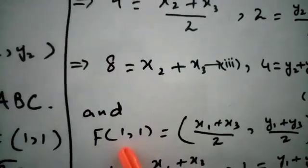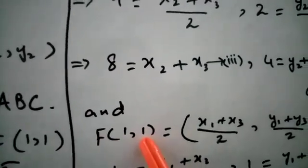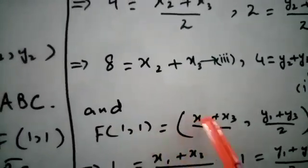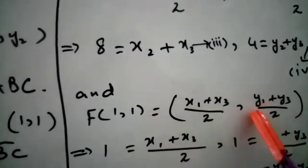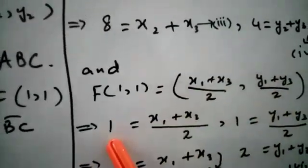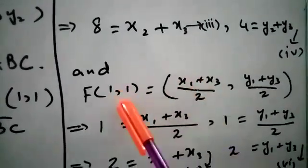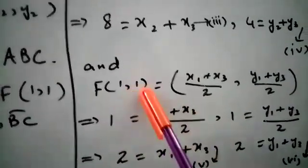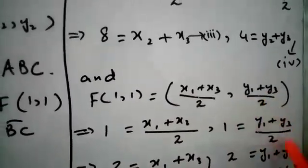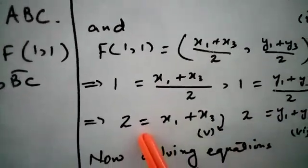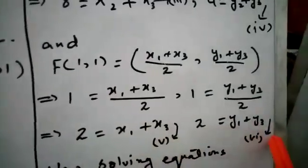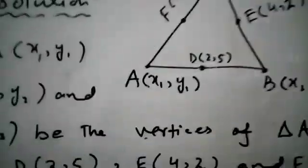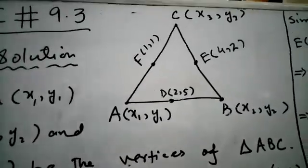For the last side AC, F(1,1) is the midpoint. Using the midpoint formula, F(1,1) equals (x1 + x3)/2 , (y1 + y3)/2. Comparing x-coordinates: 1 = (x1 + x3)/2, and y-coordinates: 1 = (y1 + y3)/2. By cross multiplication we get equation number 5: 2 = x1 + x3, and equation number 6: 2 = y1 + y3.